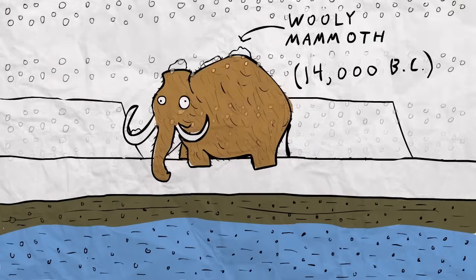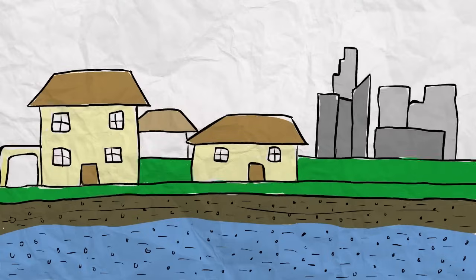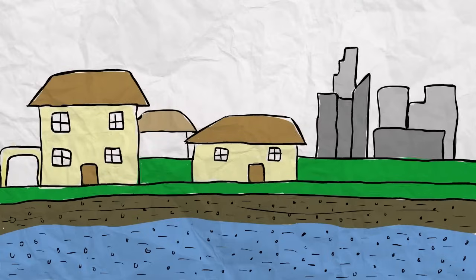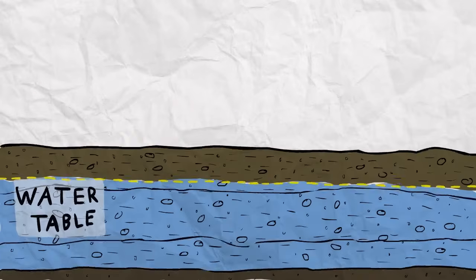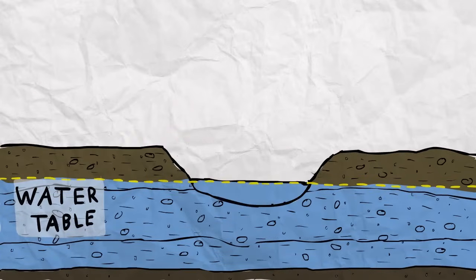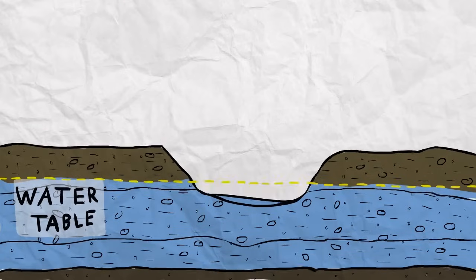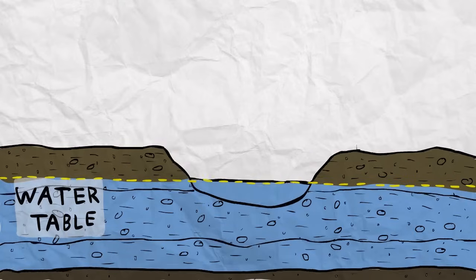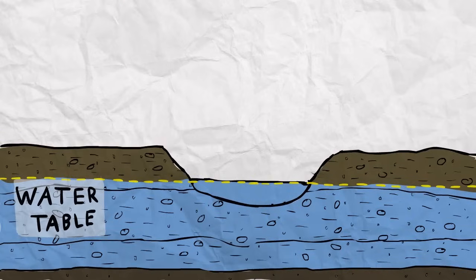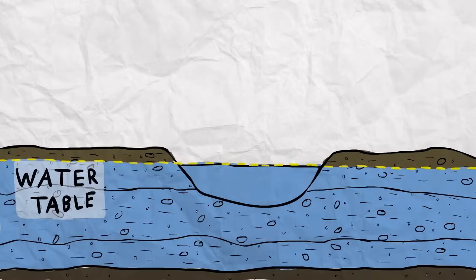But after it gets there, groundwater doesn't always stay in the ground. A lot of the water on the surface comes from aquifers. If the surface of the ground dips below the water table, groundwater flows out into the space, creating a body of surface water. If the surface water dries up, groundwater can flow in to fill it back up. And if the water table in this area rises, so does the level of the surface water.